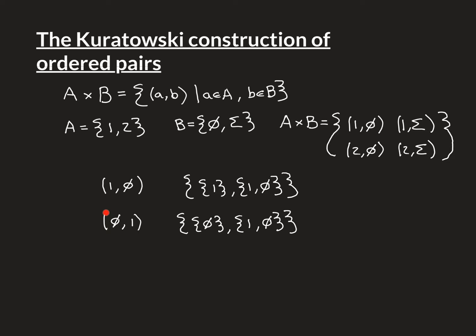If you look at the ordered pair from B×A, it would be encoded by a different set: the set containing the singleton {φ} and then the set containing {1, φ}. You don't need to change the order of φ and 1 inside that inner set, because of course the order of elements within a set makes no difference. But crucially, this overall set is not the same as the one for (1, φ). That's how we encode the order of elements in the ordered pair in this new construction.